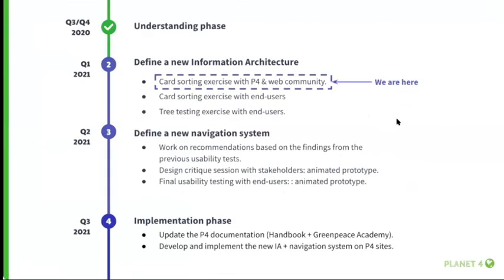As for next steps, we've just finished the understanding phase and are now starting the second phase, which is redefining the information architecture. Today we are running the card sorting activity to see how internal staff group and organize content. We are also planning to run the same card sorting exercise with end users so we can compare mental models. From there we'll follow with a tree test with end users to test the content and navigation. In stage three, all test results will help us define wireframes and prototypes to be shared with you and tested again with end users, finishing with the implementation phase. The process is long but we'd like to speed up to implement everything this year.